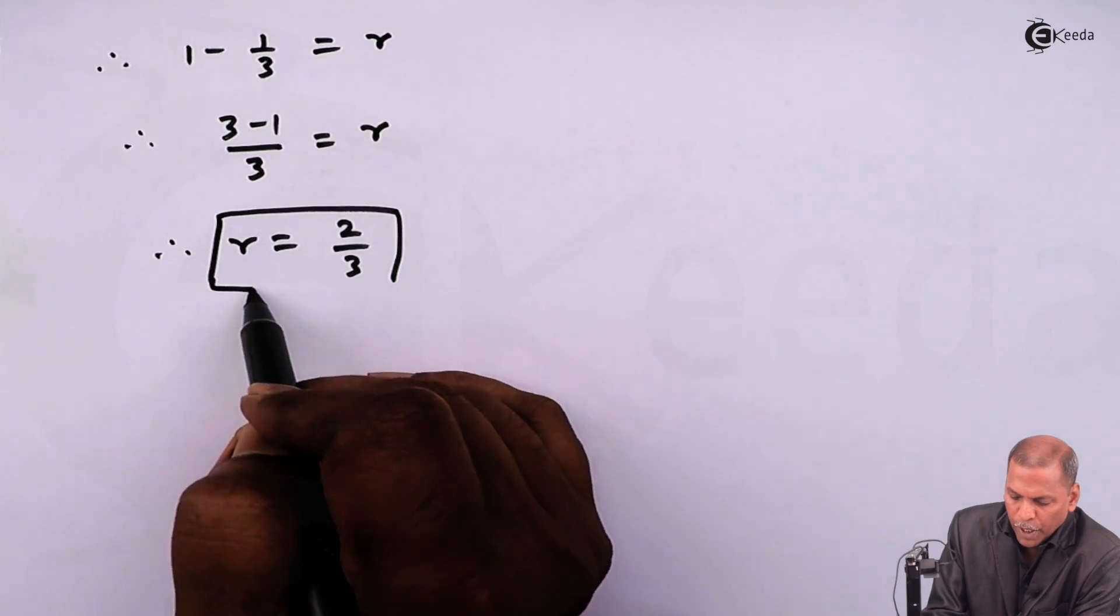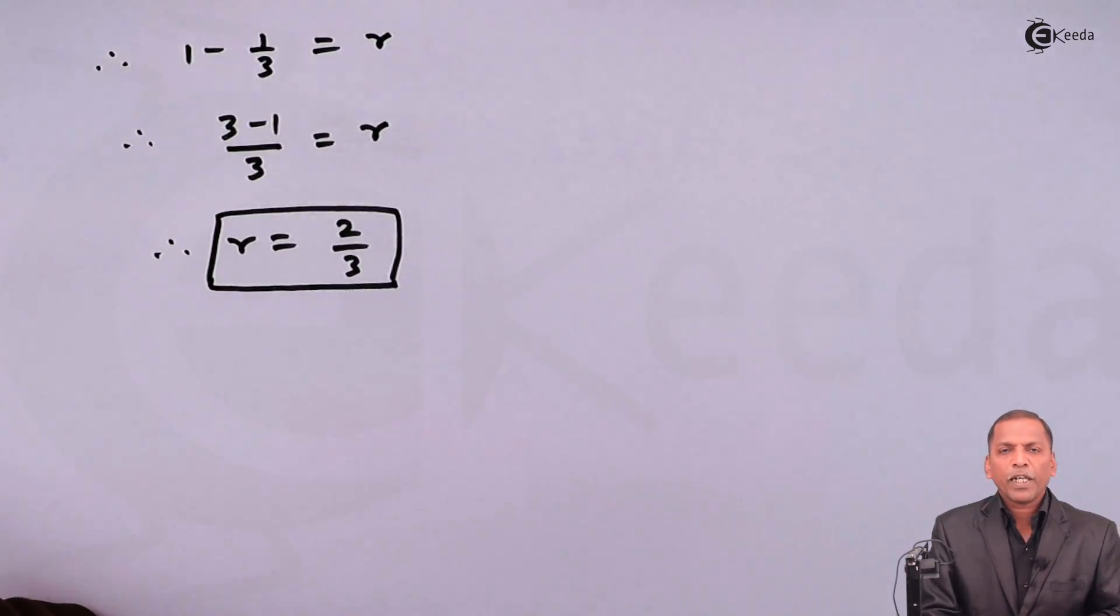In this way, we can find the common ratio of a GP. This is the required solution for the given problem. Thank you.